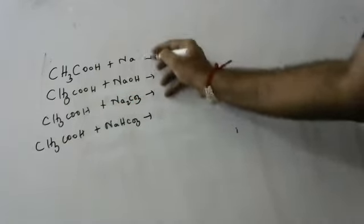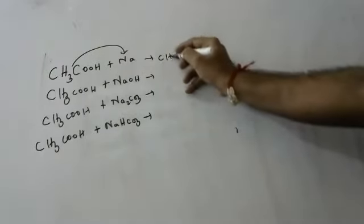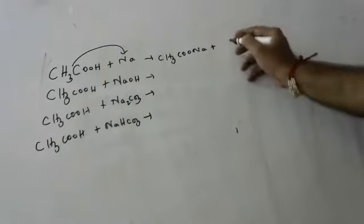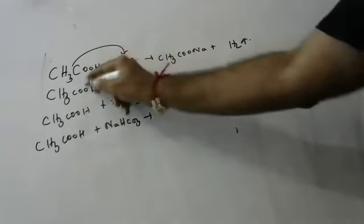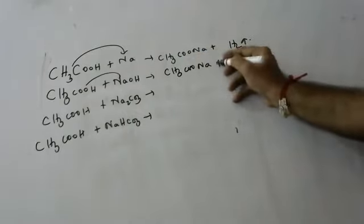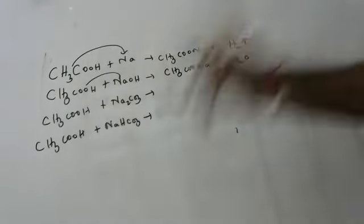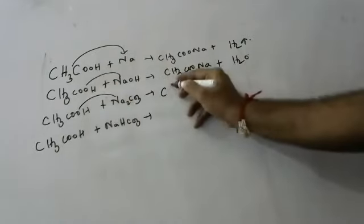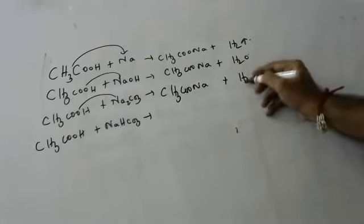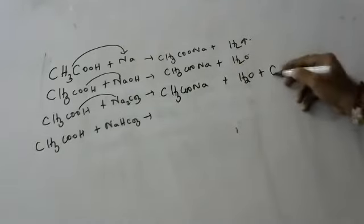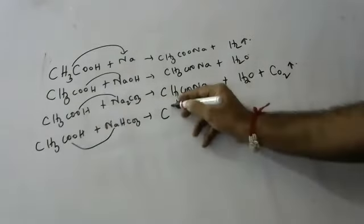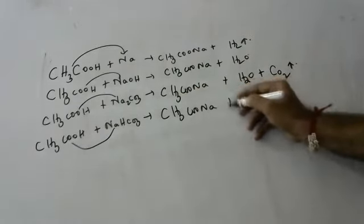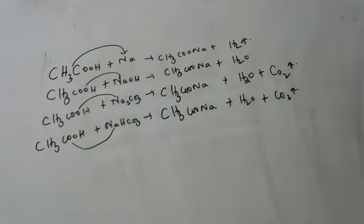Let's see with the first acid — acetic acid. Acid plus metal gives CH3COONa (sodium acetate) plus hydrogen gas. Acid plus base gives CH3COONa plus H2O — that is neutralization, salt plus water. Water is a common product. Acid plus carbonates and bicarbonates: CH3COONa plus H2O plus CO2 gas is produced — the extra CO2 gas comes out.